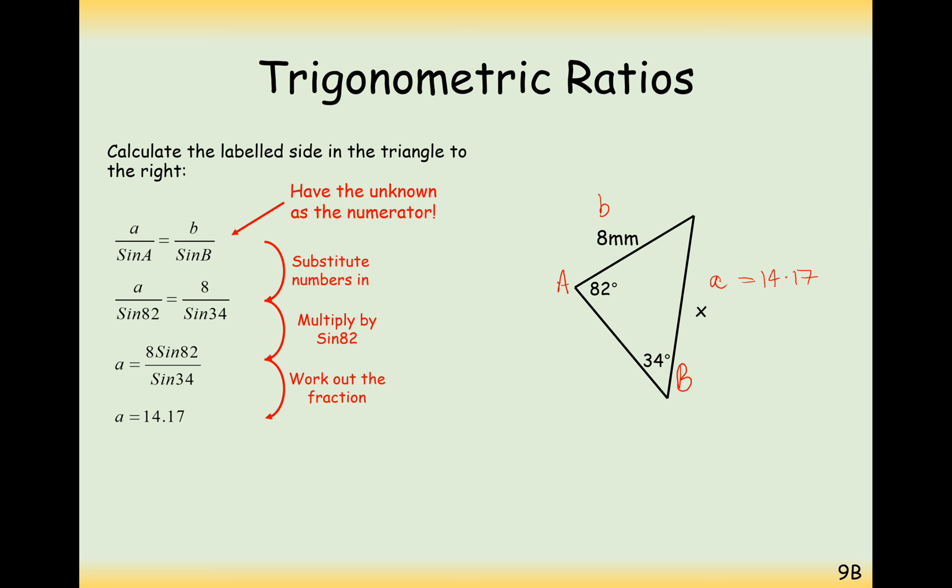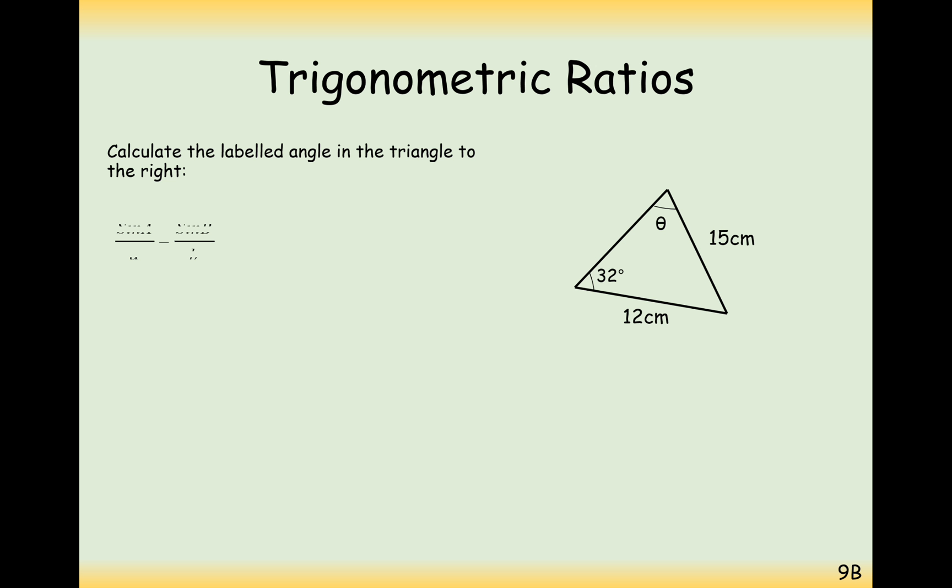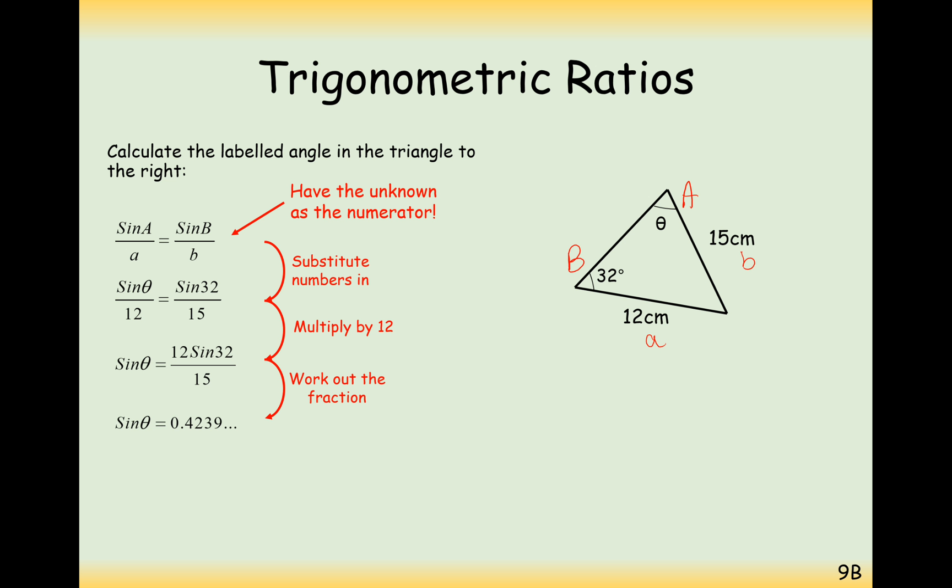Okay, this time we're going to find a missing angle. So this time it would probably be easier to use this version of the sine rule where the missing number is on the top. So carefully labelling up your diagram, what you're going to have here is the theta here is going to be called capital A. So this here is little a. This value over here is little b and this value 32 here is capital B. Substituting into the formula and timesing through by 12, you get this thing here. Work out what the value of that is. So sine theta here is 0.4239, etc. But now we need to work out the angle. So it's sine minus 1 of that and we get a final answer of 25.08.